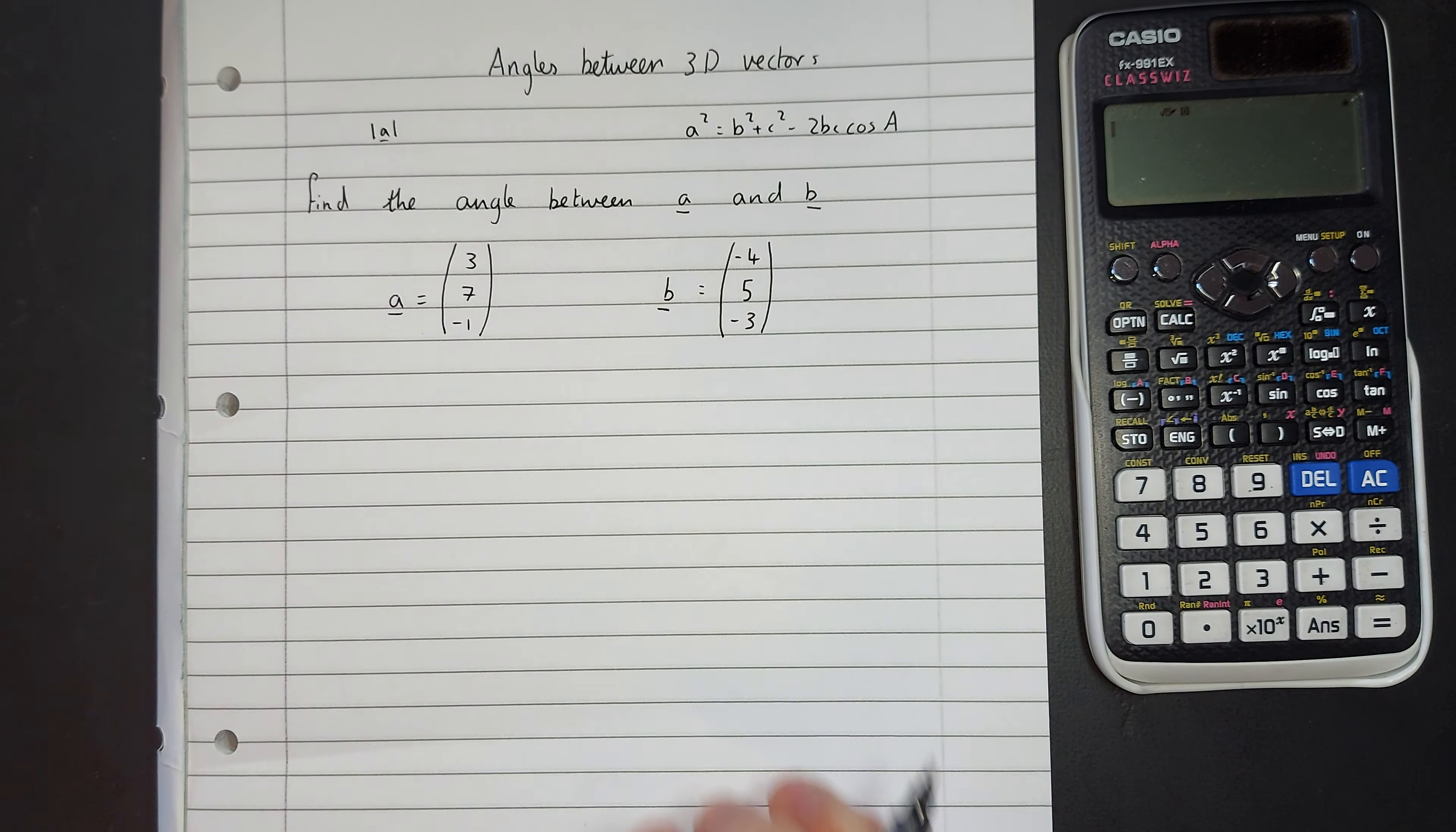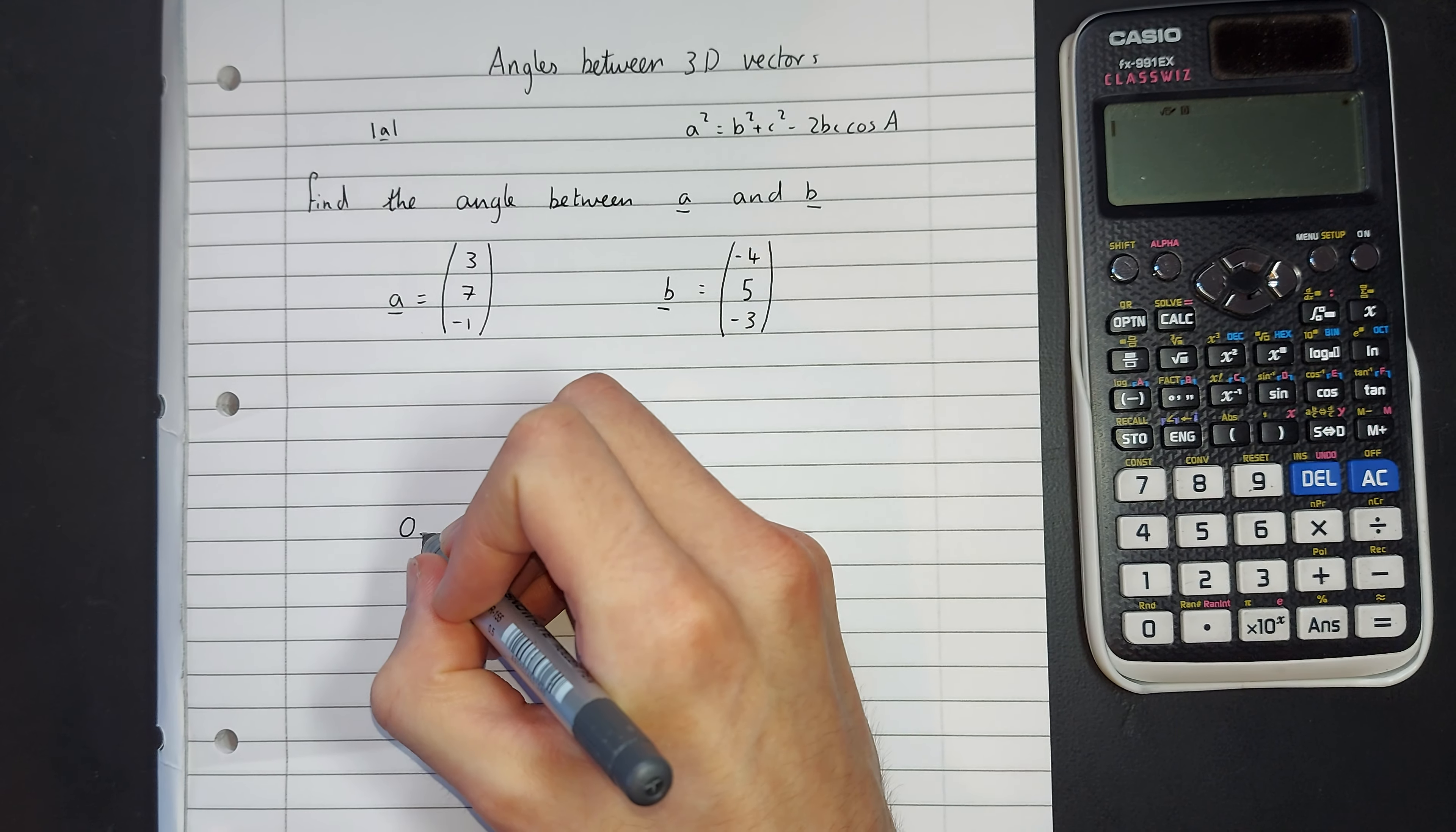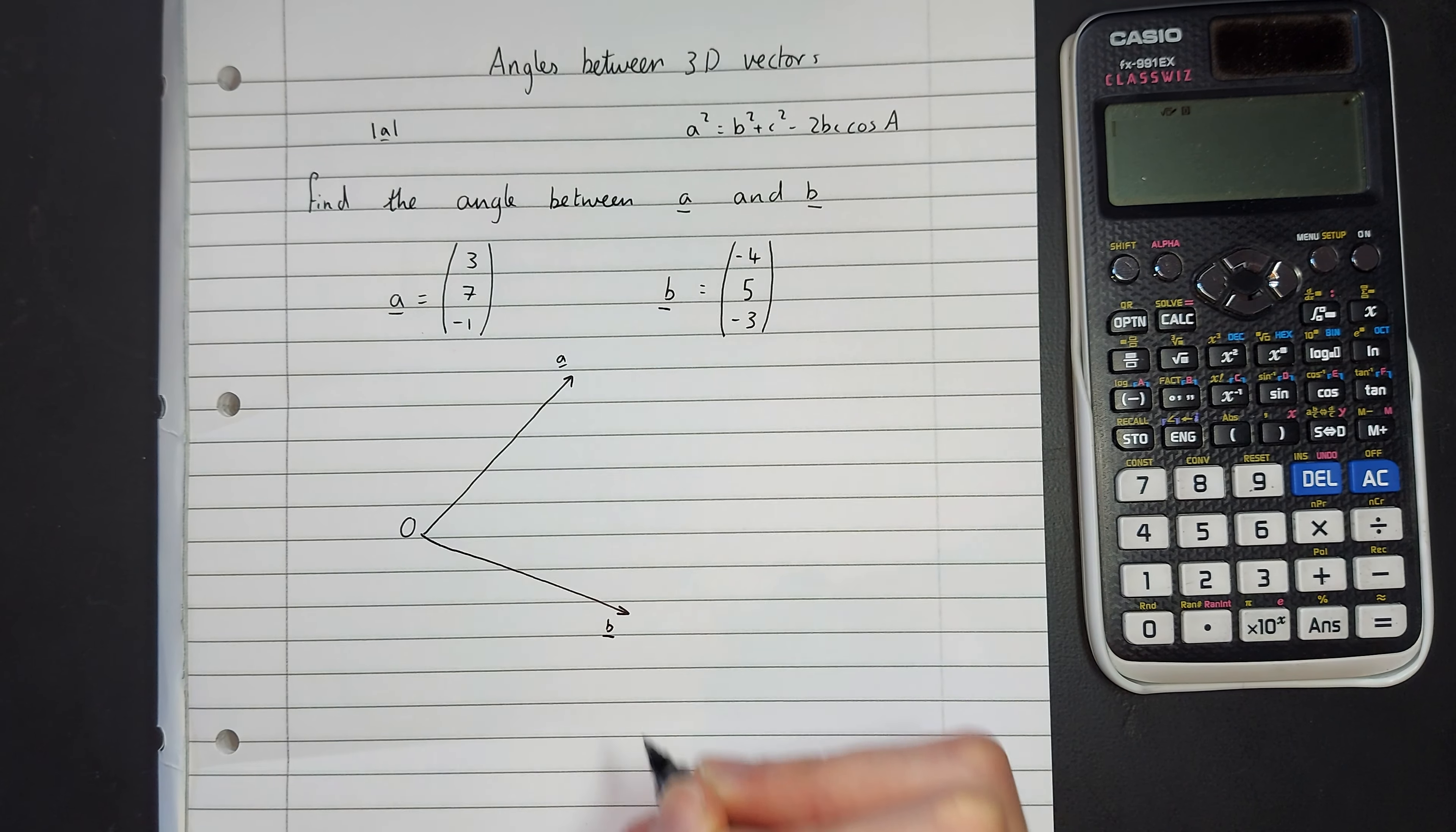So we're going to start with a diagram. My diagram is not going to be accurate, it's just going to be there to help us see where the calculations are coming from. I'm going to have these two vectors, I'm going to position them so that they're coming from the same point, and then we're going to work out the angle in between them. Let's write them as a position vector. We could write them anywhere, but let's start from the origin. So let's have some point O, and we're going to have some vector A.